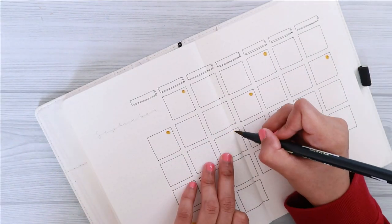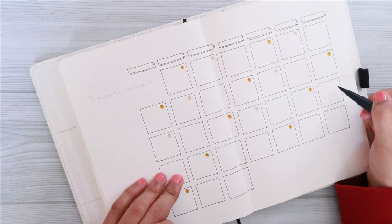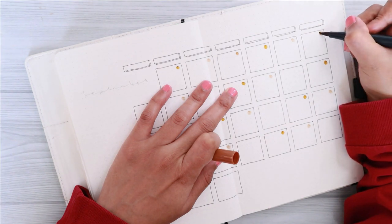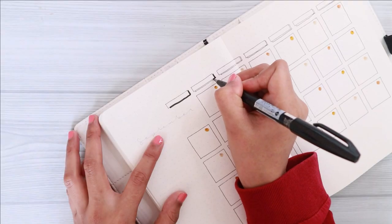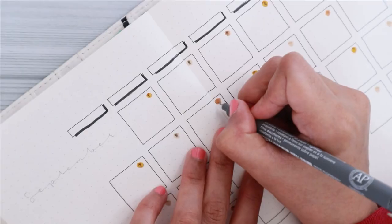For the dates, I used three different Tombow Dual Brush pens, which I already stated at the beginning of this video. But in case you guys missed that, the ones that I used are 026, 977, and also 992.